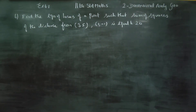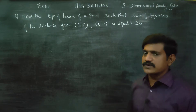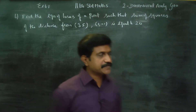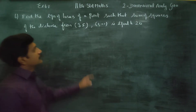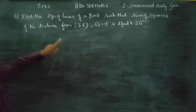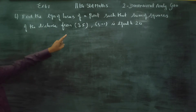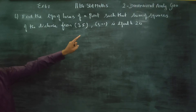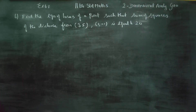Dear 11th standard students, in Exercise 6.1, find the equation of the locus of a point such that the sum of the squares of the distances from (3,5) and (1,-1) is equal to 20.